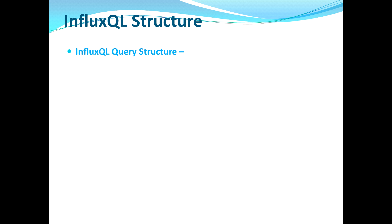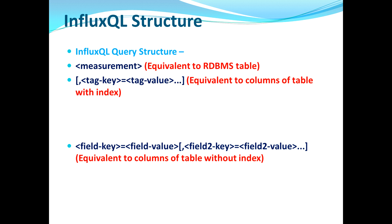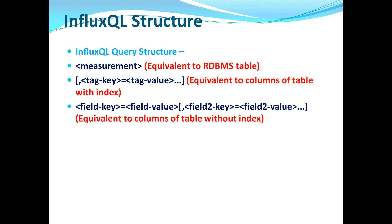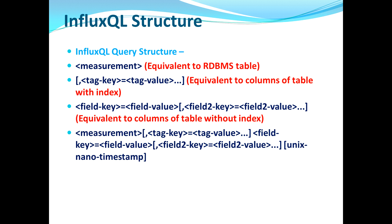Let's jump to the InfluxQL structure. The very first thing is the measurement, which is essentially the same as a table name in RDBMS. Then we have a tag key with a corresponding tag value — InfluxDB automatically creates an index for tag keys. Then we have a field key equal to field value. The difference is that InfluxDB creates an index for tag keys by default, but field keys are simple columns without an index.